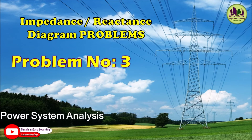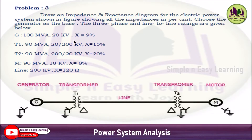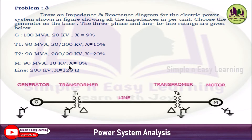In this video we are going to solve problem number 3 on impedance and reactance diagrams. The given problem: draw an impedance and reactance diagram for the power system shown in the figure, with all impedances in per unit, choosing the generator as base. The three-phase line-to-line ratings are: generator 100 MVA, 20 kV, X = 9%; transformer T1 90 MVA, 20/200 kV, X = 15%; transformer T2 90 MVA, 200/20 kV, X = 20%; motor 90 MVA, 18 kV, X = 8%; and transmission line 200 kV, X = 120 ohm.